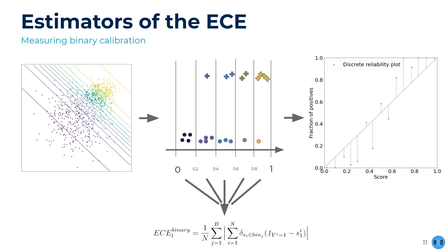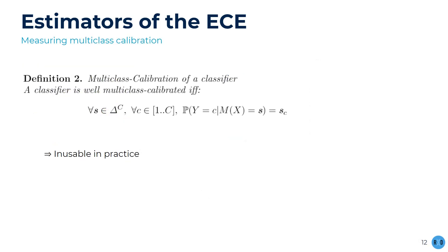Indeed, in order to get the full picture, one only has to look at one of the two classes, since the score for the other class is symmetric because of the summation constraint. When it comes to multi-class classification, however, things get harder. The quantification of the strict definition of multi-class calibration is impossible to estimate as of today, because one would need to group points with similar score vectors, which would produce statistically irrelevant computations because of the small number of samples in each group.